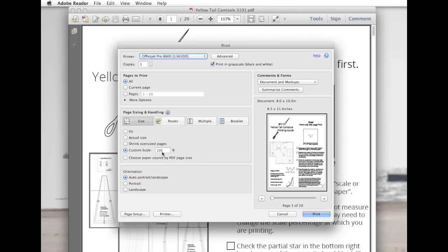Something else you might want to consider is making sure that you're printing in grayscale, meaning black and white. On the computer you're using, it might say Print in Economy Mode. Now, we're going to want to print the first page. That way, you can double check the scale to make sure that everything printed out perfectly correctly.